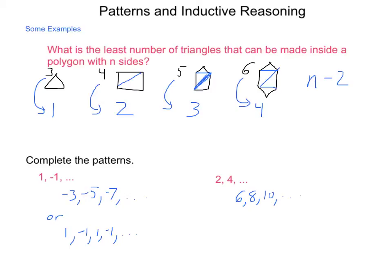Or are we going 8, 16, 32, multiplying by two each time? Each one is valid. We do not have enough information in order to base a substantial conjecture on.